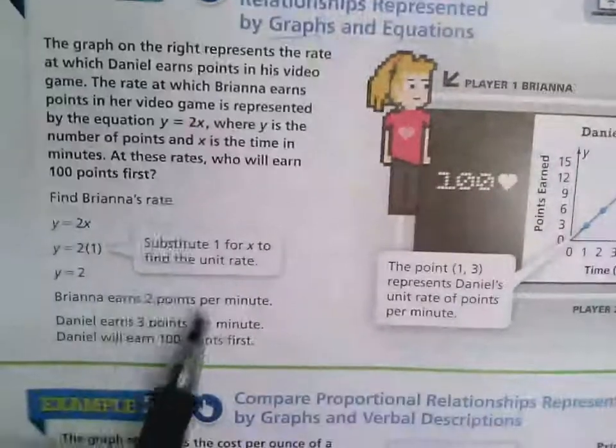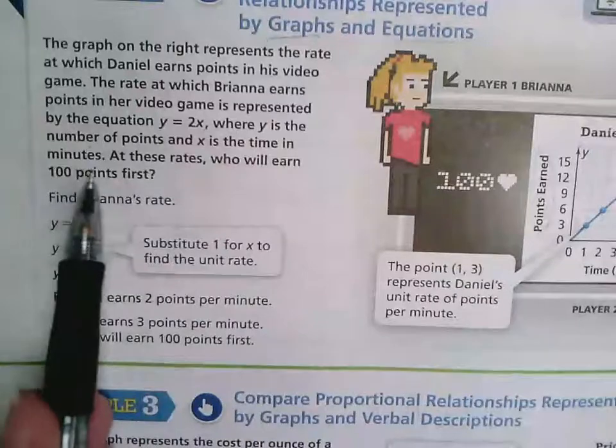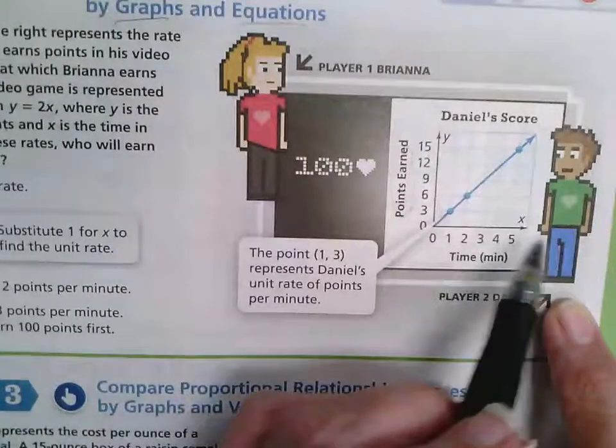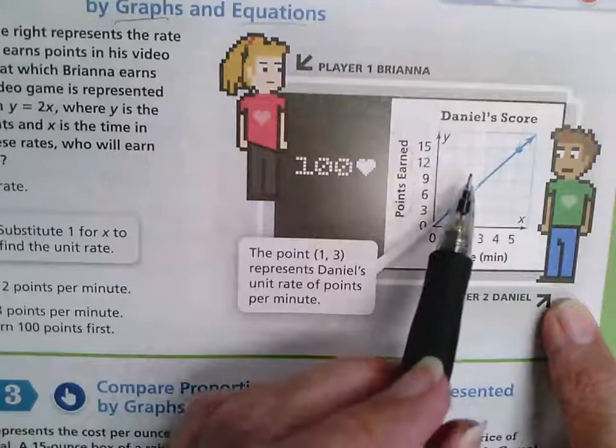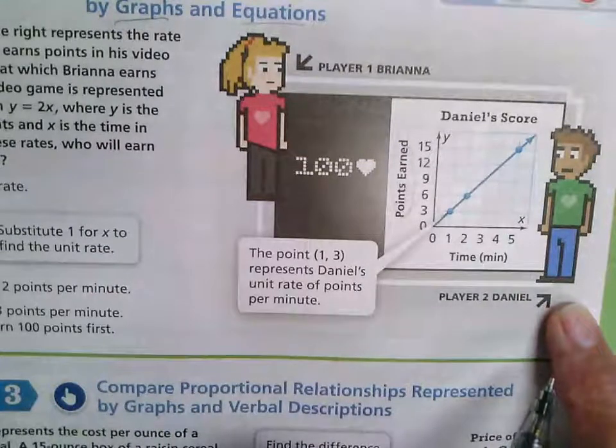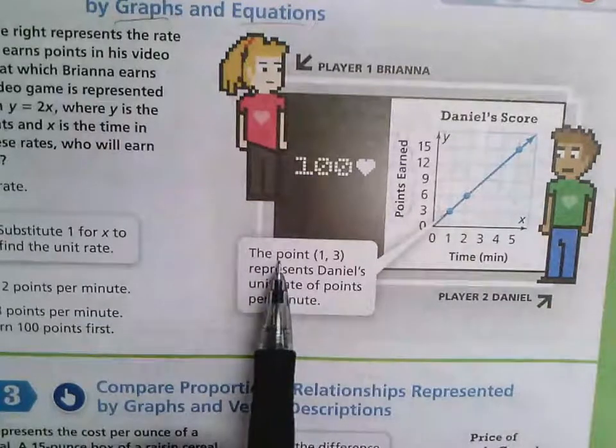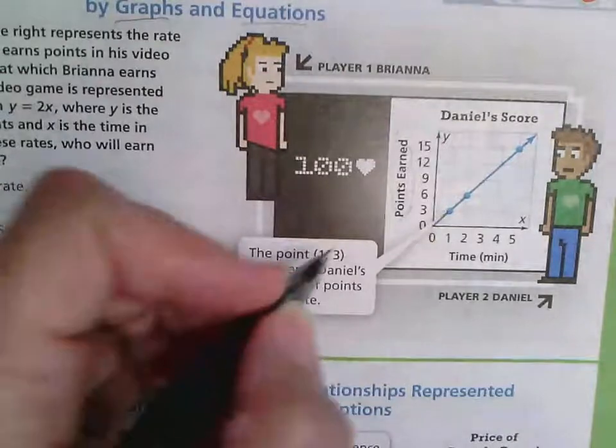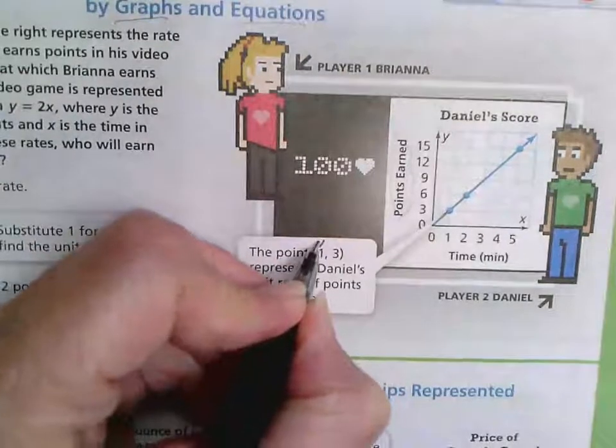And x is the time in minutes. So as time goes by, how many points does each person get? You can see they're telling us that the point (1, 3), and remember your x variable is always first, your y variable is second.